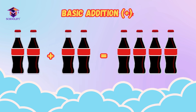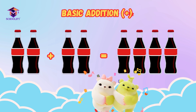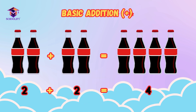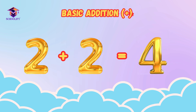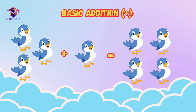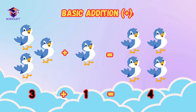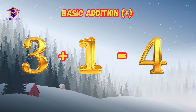Two bottles plus two bottles is equal to four bottles — it means two plus two is equal to four. Three sparrows plus one sparrow is equal to four sparrows. It means three plus one is equal to four.